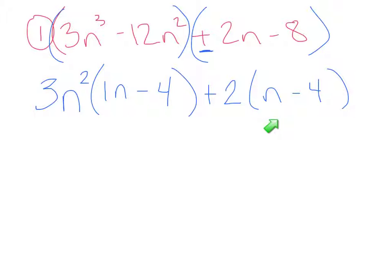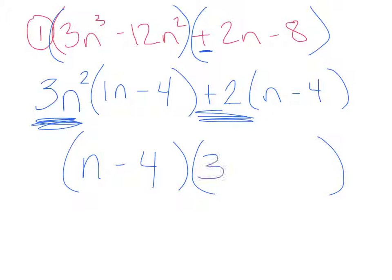So our answer is still going to be written in two sets of parentheses. So you have your n - 4, and then your other parentheses comes from what you took out. We took out 3n² + 2. Let's try another one.